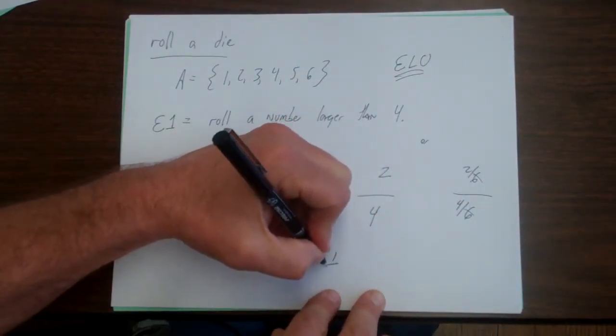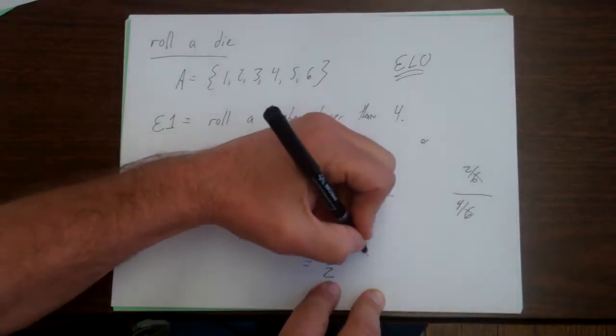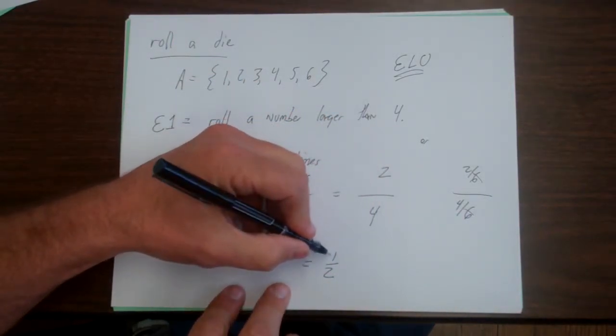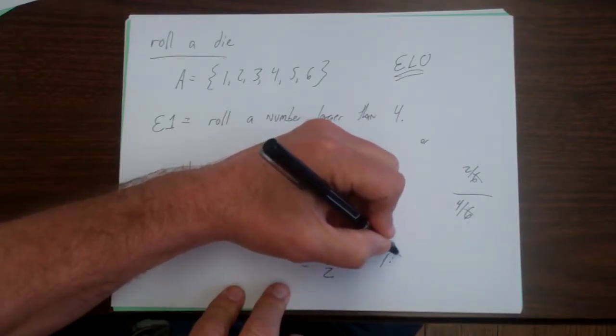You get 2/4ths or 1/2. So you could say the odds are 1/2. You usually don't use it in terms of fractions. You usually say the odds are 1 to 2. We often write like this, 1 to 2.